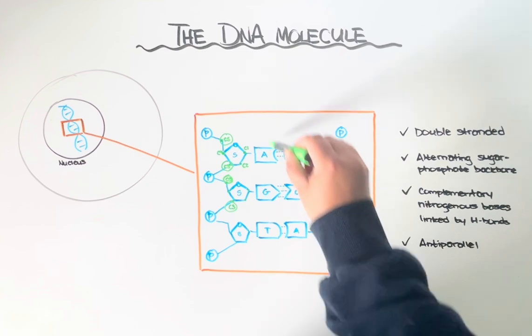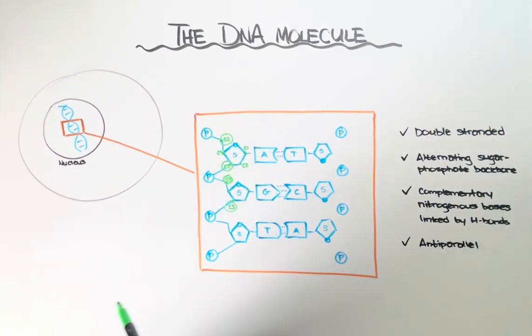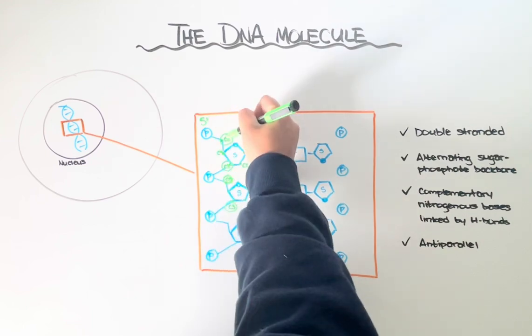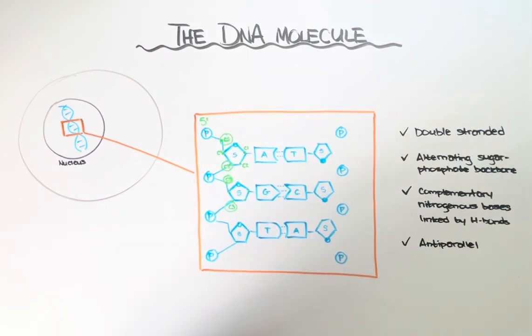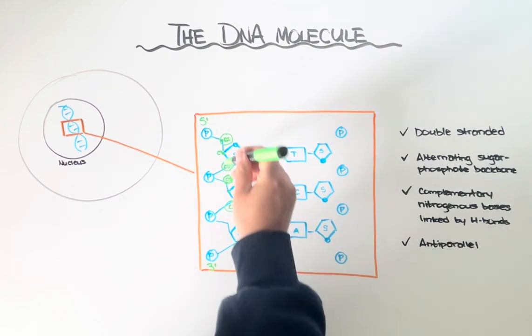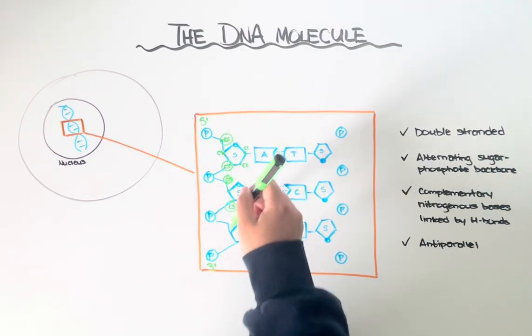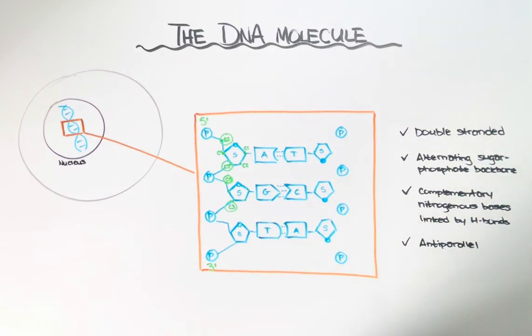We would label the directionality of this side of the strand as five prime, because that's the first carbon it attaches to, to three prime, because that's the next carbon it attaches to. And the same pattern makes its way down the entirety of that strand.